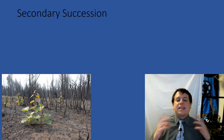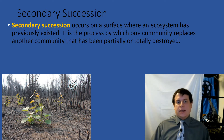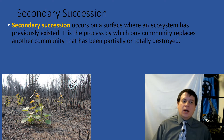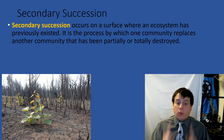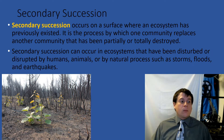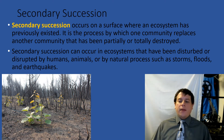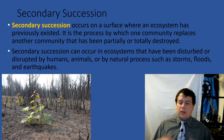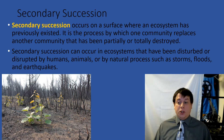There's another type of succession called secondary succession. Secondary succession occurs on a surface where an ecosystem has previously existed — it's the process by which one community replaces another community that has been partially or totally destroyed. The key thing with secondary succession is it's not starting from bare rock; it's starting from bare soil. So the soil is already there. That picture over there is plants regrowing after a fire. Secondary succession occurs in ecosystems that have been disturbed by humans, animals, or natural processes such as storms, floods, earthquakes, or forest fire. When that ecosystem has been destroyed and the dominant plant species removed, this succession process starts over and you go from bare soil back up to a climax community.